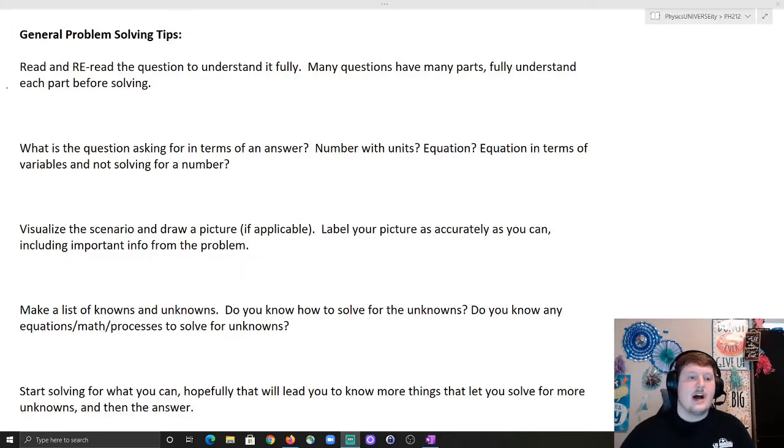Number two, what is the question asking for in terms of an answer? Is it asking for a number with units? Is it asking for an equation? An equation in terms of variables and not actually plugging numbers in? This is really crucial and what I recommend is that you actually write what the question is asking for on the side of the page once you figure that out at the beginning. So, hey, I know that I'm looking for a velocity in meters per second. So, off to the side of my page, I'm going to write something like v equals question mark meters per second.